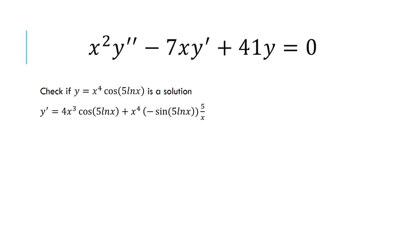So in order to do this, you want to take the derivatives first. This one involves using the product rule and the chain rule. So break this up into two functions, x to the 4th and cosine 5 ln of x.